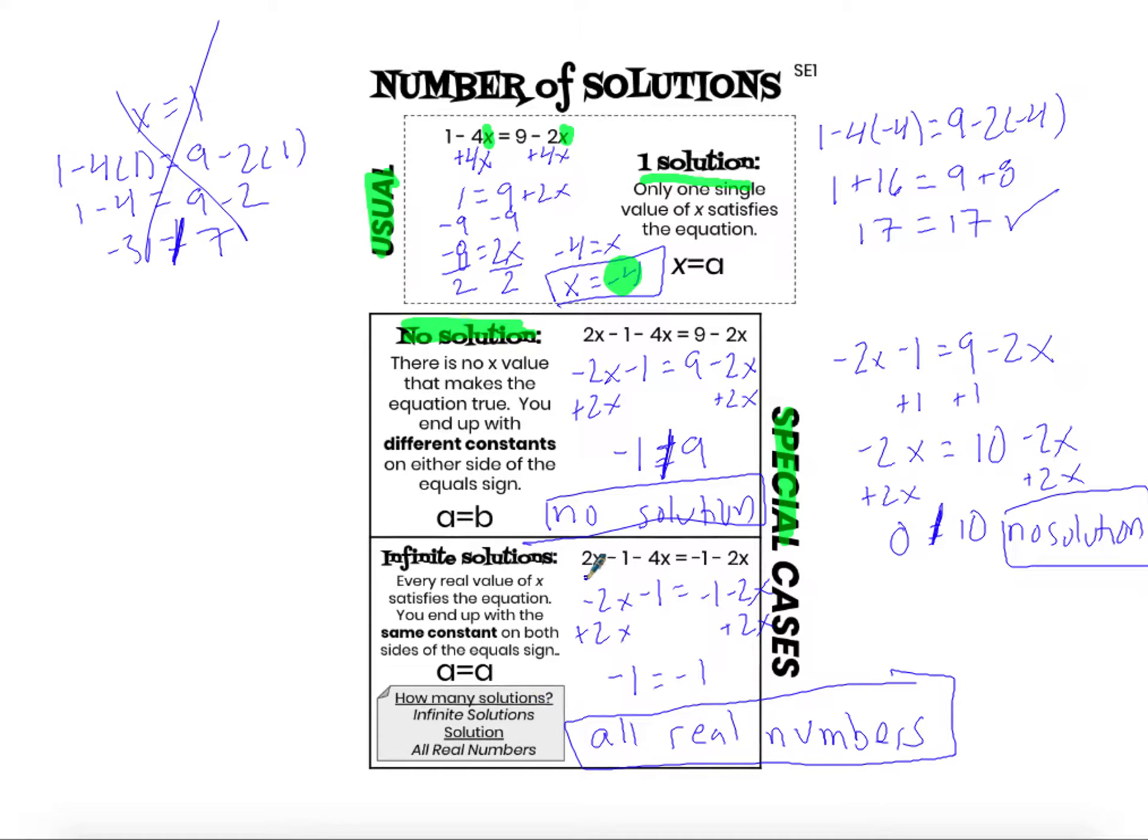Looking at the second line, the all real numbers solution makes sense because on the left-hand side I'm multiplying x by negative 2 and then subtracting 1. That's going to give me exactly the same thing as negative 1 minus 2 times that number. These two expressions are equivalent and will always give me the same number.